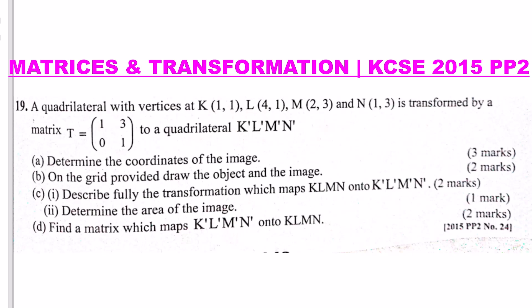So that is the question. Let's go to the first part — you're supposed to determine the coordinates of the image. You have the object K, L, M, N with the given coordinates, and you're given the matrix of transformation, and you're supposed to find the image. To do that, we take the matrix of transformation and pre-multiply it with the object to get the image.